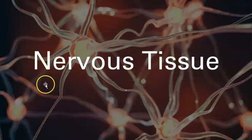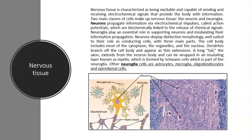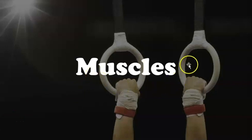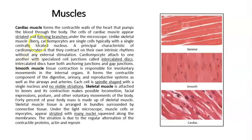Since nervous tissue is a tissue, you need to know the cells. For the nerve tissue, the cells are going to be neurons and neuroglia. This is an example of a neuron. There are three kinds of muscles: cardiac muscle, smooth muscle, and skeletal muscle.